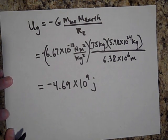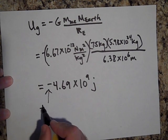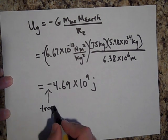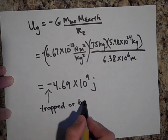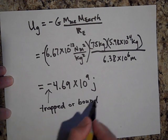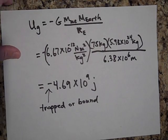So, one more time, the negative tells you you're trapped. If you have a total mechanical energy that is negative, then you're trapped or bound. But if you have a positive value, then you're free of anything.